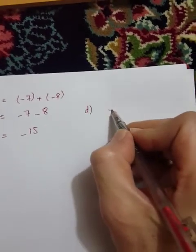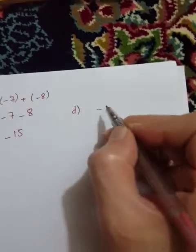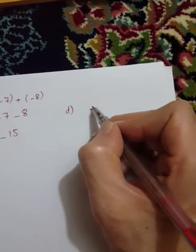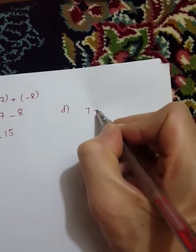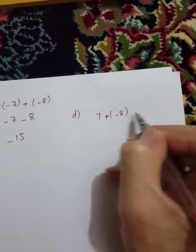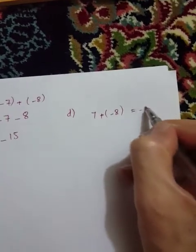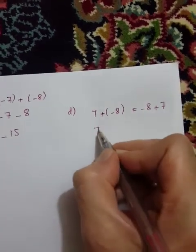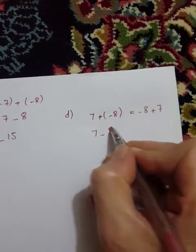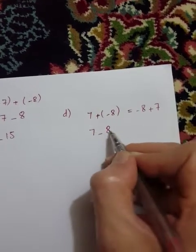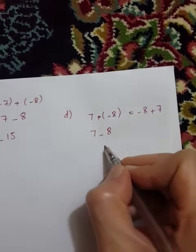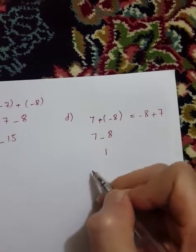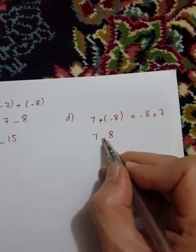For part d, we change it: one plus minus eight, or minus eight plus seven. Simplify: one plus multiply minus minus eight. When two numbers are minus, multiply minus equals minus.